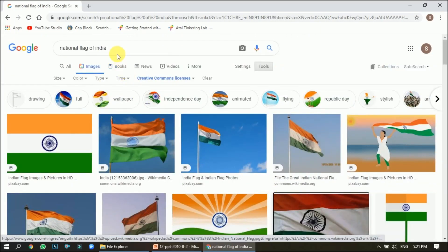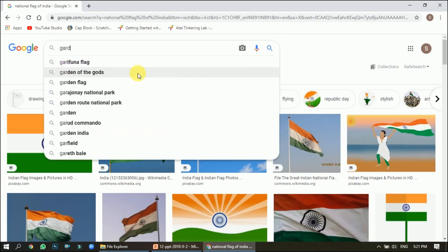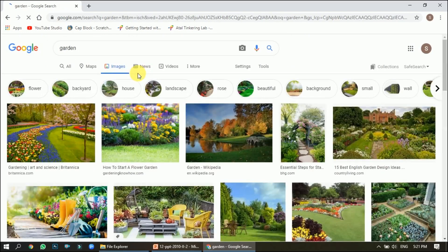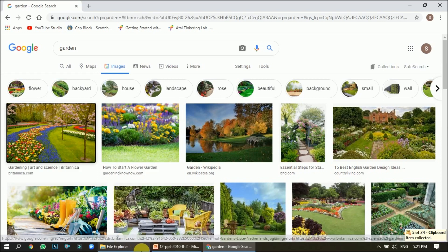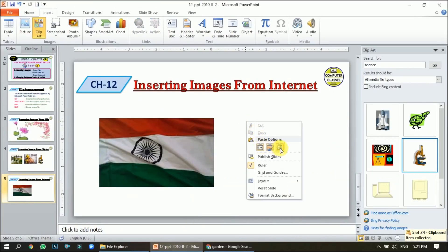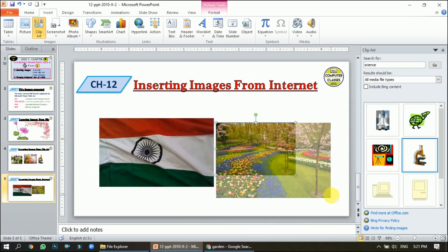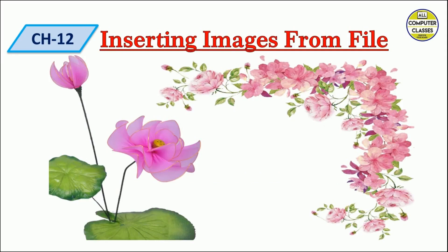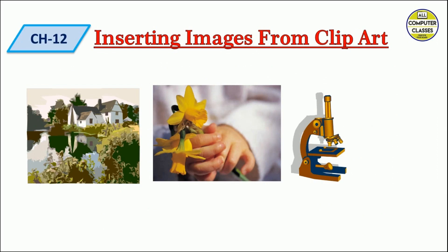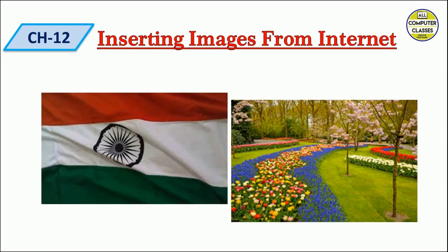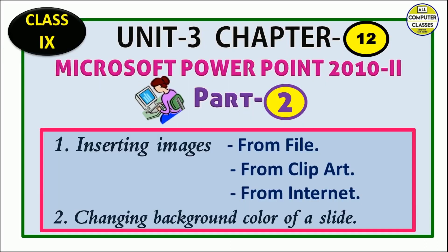Let me search for 'garden' in the web browser. Here is a garden image — it's very beautiful. Right-click, Copy, go back to the slide, right-click and Paste. So this is the garden image I've got. I hope students you have learned how to insert images from file (already saved on the computer), from Clip Art (which comes with PowerPoint), and from the internet (search, copy, and paste). These are the three methods of inserting images. The second topic is changing the background color of a slide.